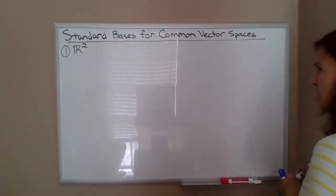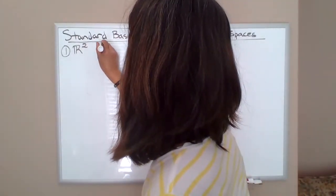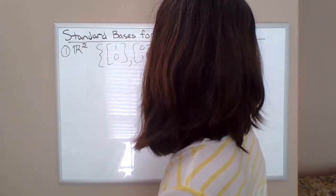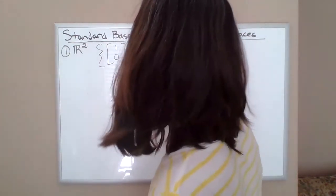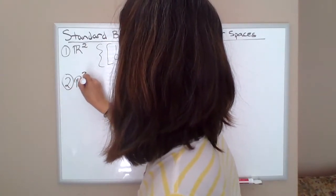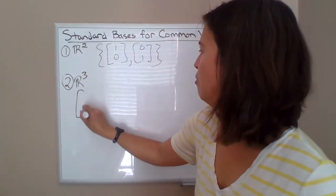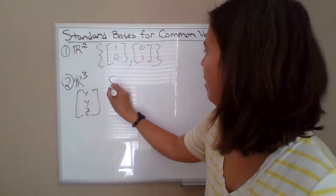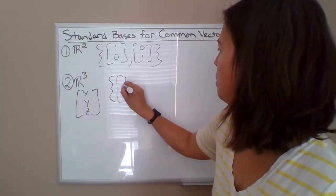Standard basis for R² is just the collection with those two unit vectors. Let me write that down. So 1,0 and 0,1. So R³, you're probably, you wouldn't be surprised then. R³ is the collection of all vectors of the form X, Y, Z.